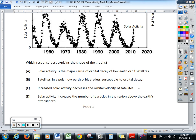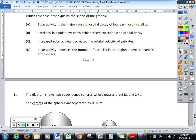Increased solar activity decreases the orbital velocity of satellites. Is that true? From this graph, is it true? Yes. So C is a possible, viable option. But, remember, you've got to choose between two options which are the best. D. Solar activity increases the number of particles in the region above the Earth's atmosphere. Is that a better answer to explain it? Yes. So, though C is true, D is better. And that's the lesson you need to learn from this one. D is a better choice.